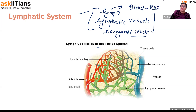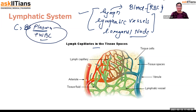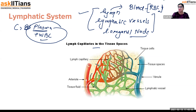Lymph flows through the lymphatic system as part of the immune system — protecting every part of our body. Lymph is basically blood minus RBCs; it consists of plasma plus WBCs. Blood mainly has RBCs, platelets, plasma, and WBCs. WBCs — leukocytes or white blood cells — are the defense cells. Lymph is formed through filtration of blood and flows through lymphatic vessels.